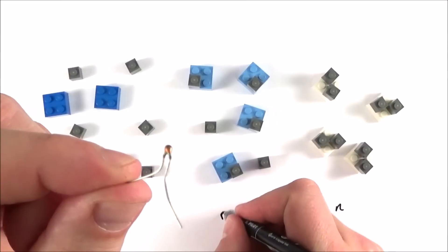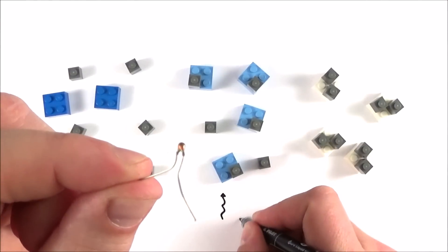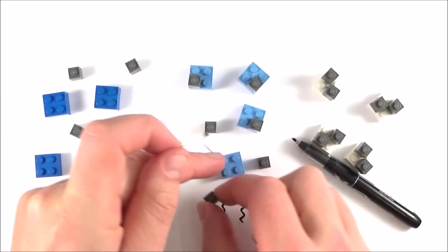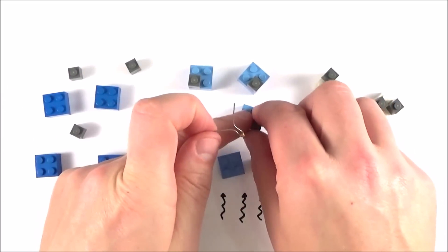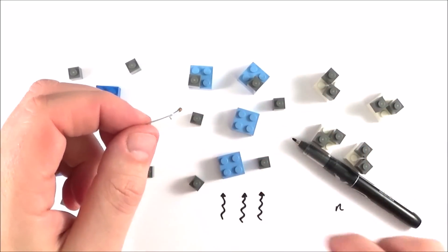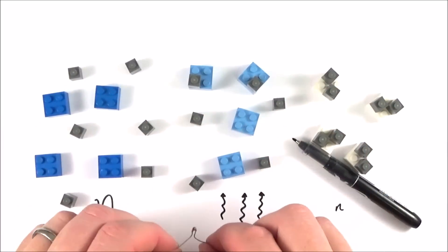A thermistor, when you apply heat to it, allows these electrons to escape the places where they're locked in and that means the number of charge carriers increases. Therefore this becomes a better conductor when the heat goes up. So that's a thermistor.